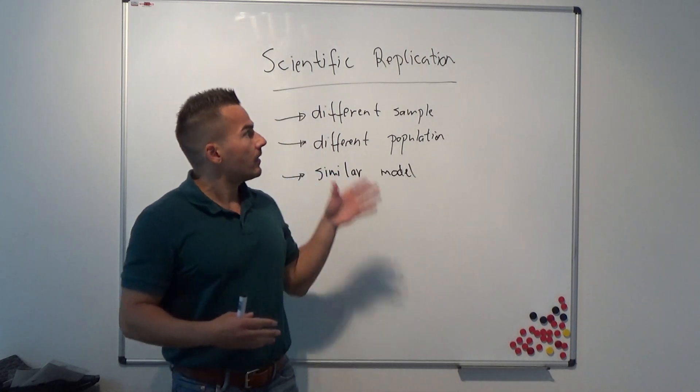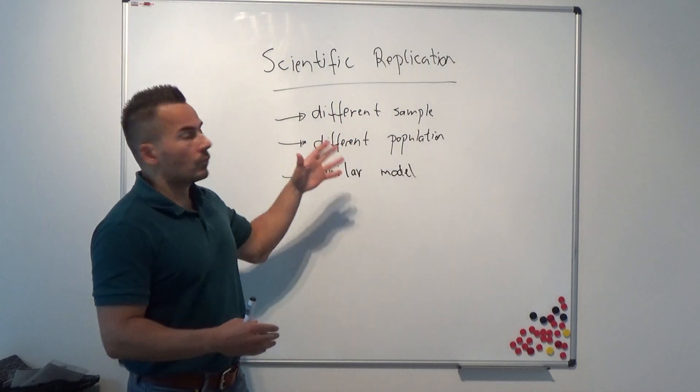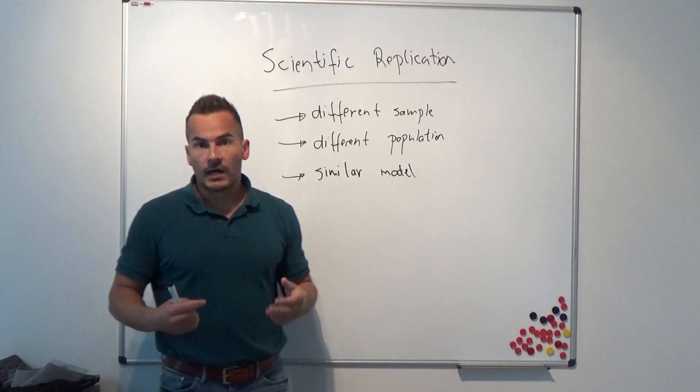They argue that they apply the scientific replication to 452 different stock market anomalies.